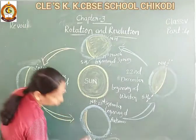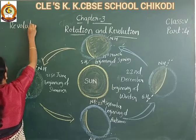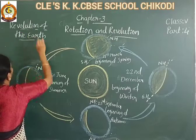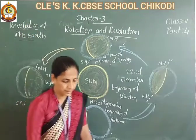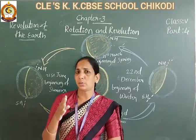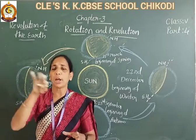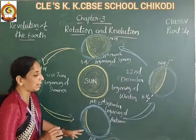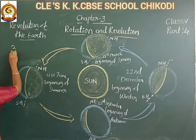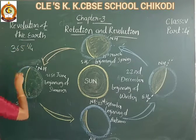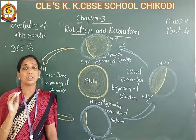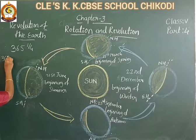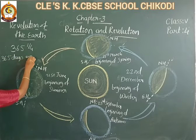Revolution of the earth. The earth orbits around the sun, and it takes 365 days and one-fourth — meaning 365 days and 6 hours — to complete one orbit around the sun.